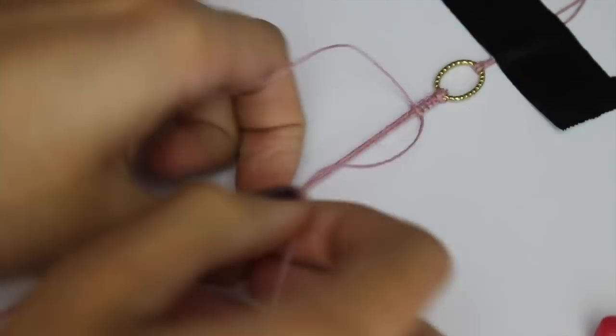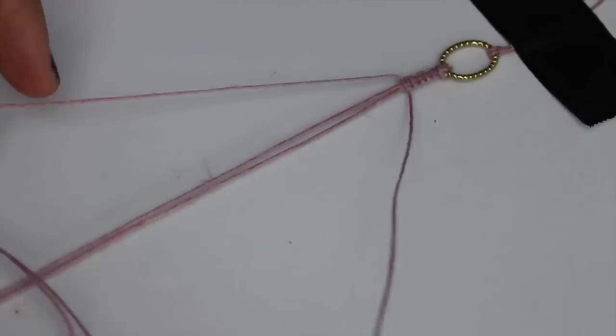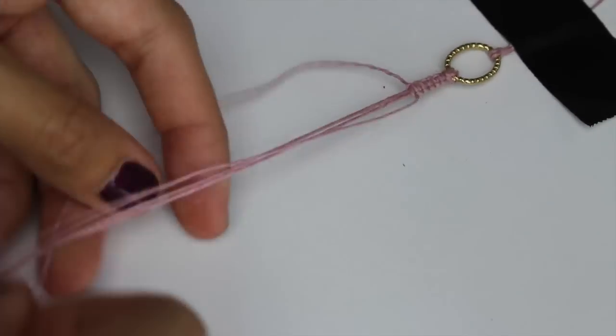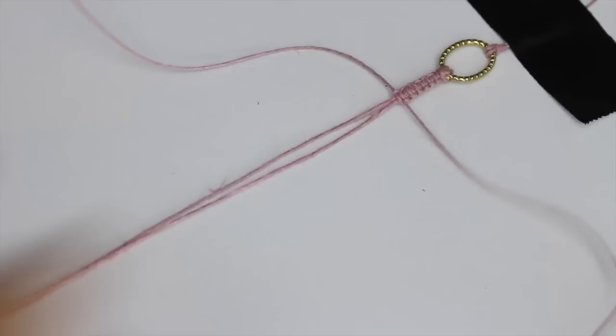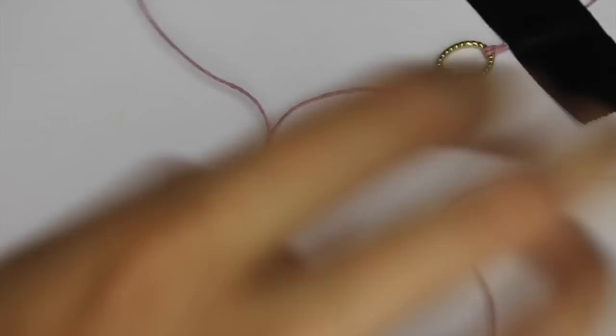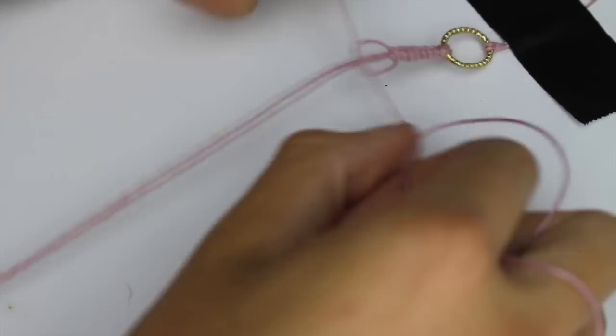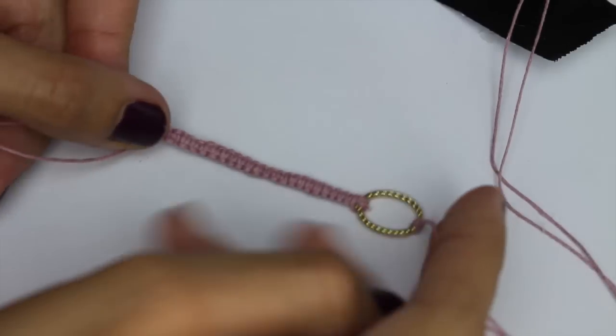Just repeat this step. It's actually really easy as soon as you get the hang of it—it just takes a little bit of time, and once you get it, it goes by really fast. You're going to want to continue this pattern until you have a few inches done. You can measure this on your wrist; it should be about half of your wrist.